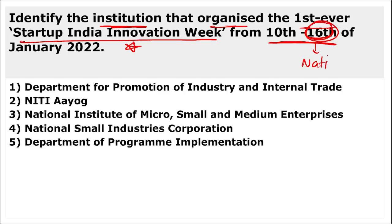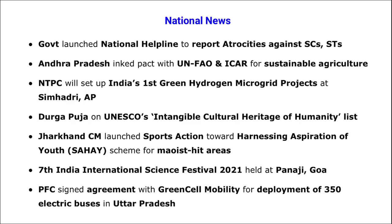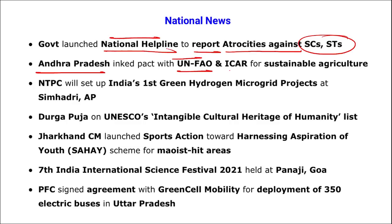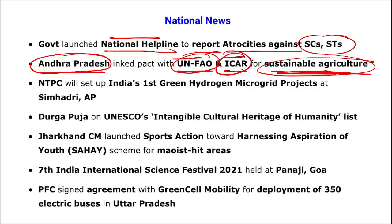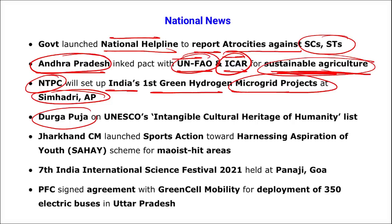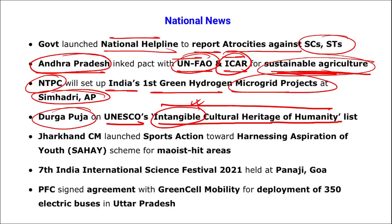National Startup Day on 16th January is observed by DPIIT. The government launched a national helpline to report atrocities against SCs and STs. Andhra Pradesh inked a pact with UNFAO and ICAR for sustainable agriculture. NTPC will set up India's first green hydrogen microgrid project in Simhadri, Andhra Pradesh. Durga Puja was listed on UNESCO's Intangible Cultural Heritage of Humanity list — it is from West Bengal.